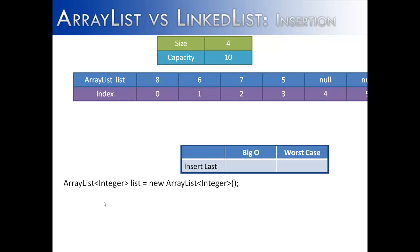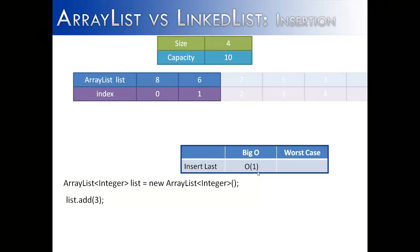An ArrayList has two sizes: a size and a capacity. The size means how many items are currently inside the list — in this example, 4 items: 8, 6, 7, and 5. The capacity indicates how many items could be placed inside the list, because an ArrayList does not have infinite memory. By default, this capacity is going to be 10. If we insert an item at the end using list.add(3), it has a big O of 1 or constant time. However, there will be a problem if we reach capacity.